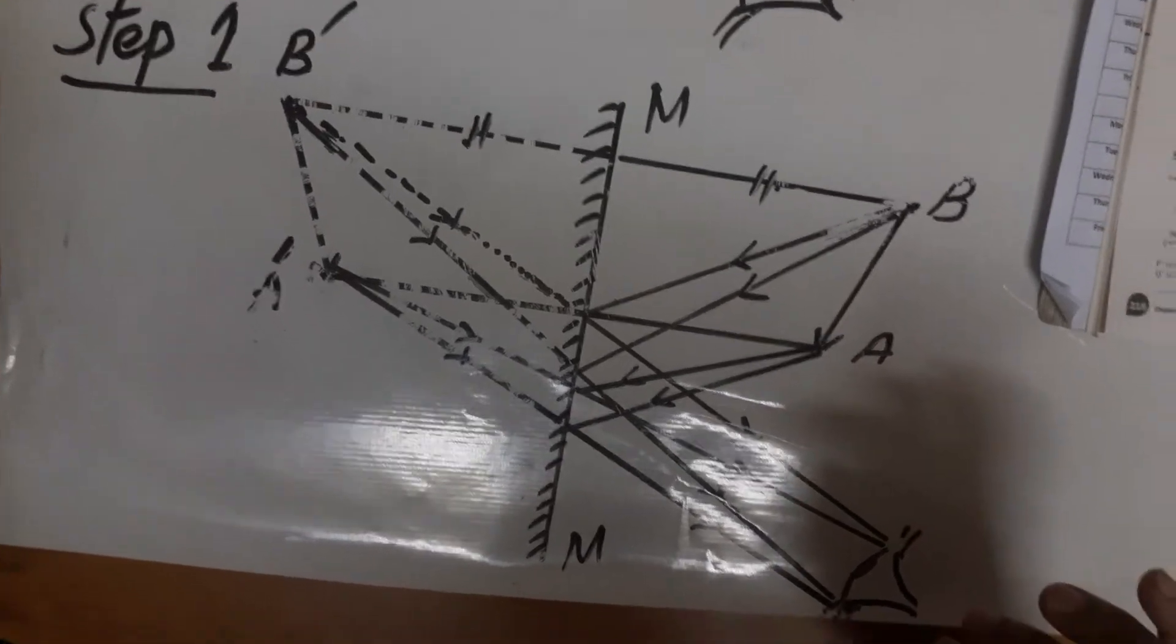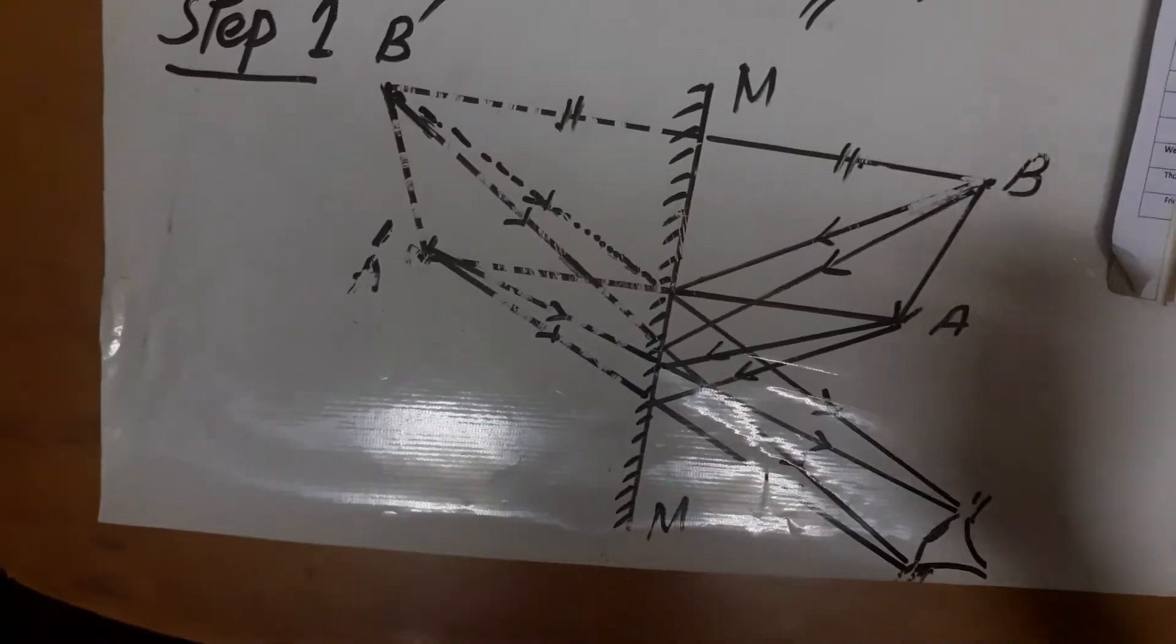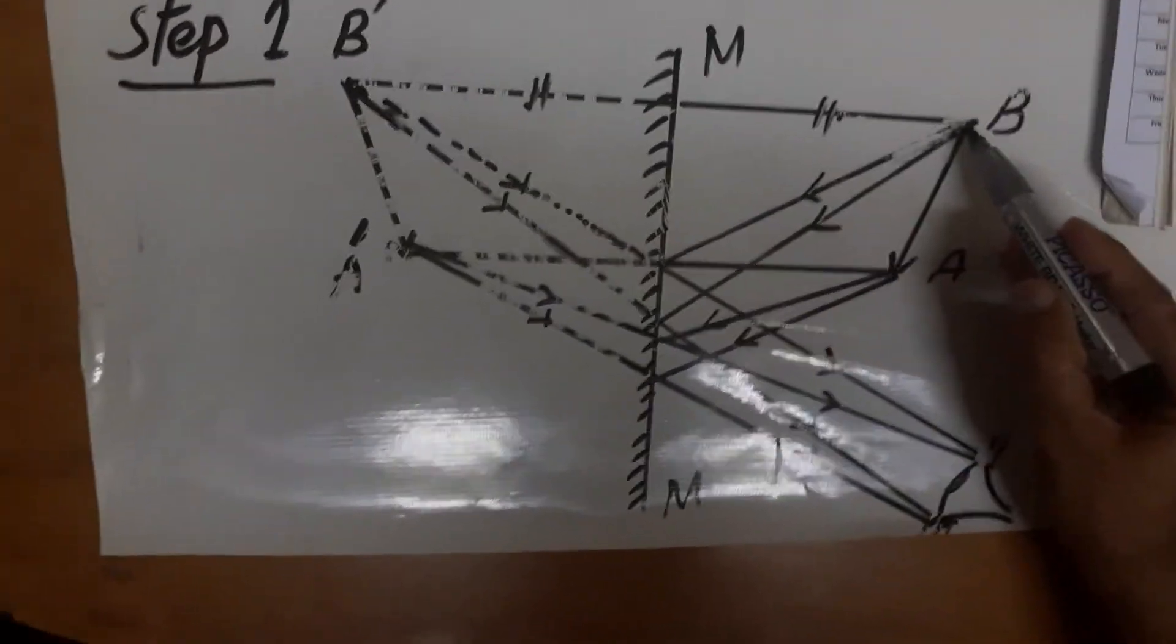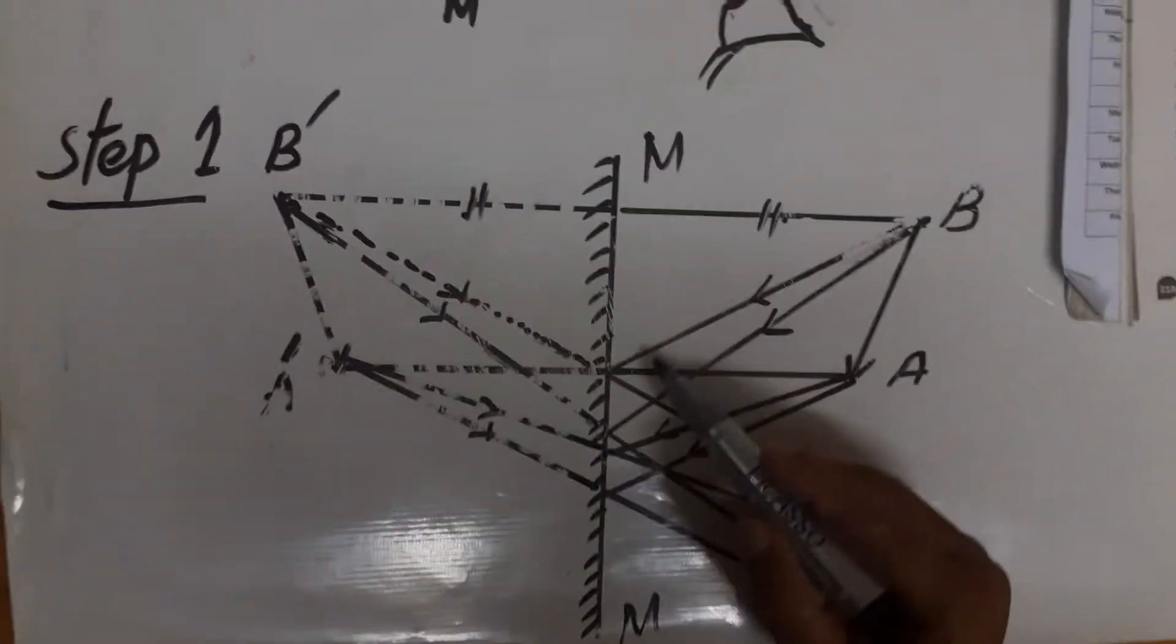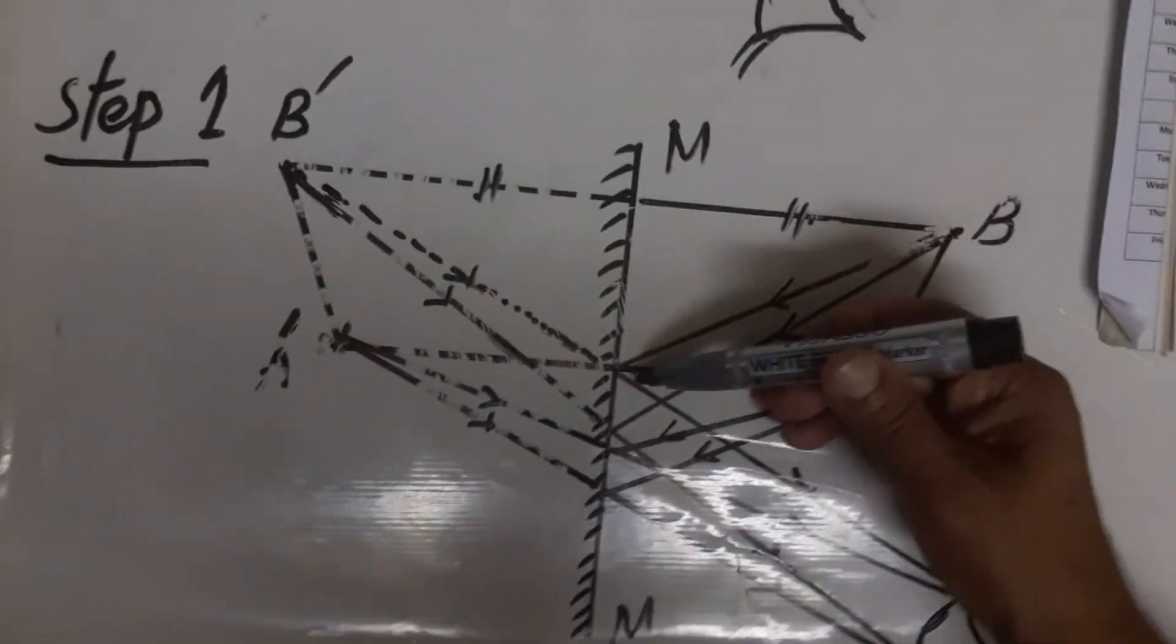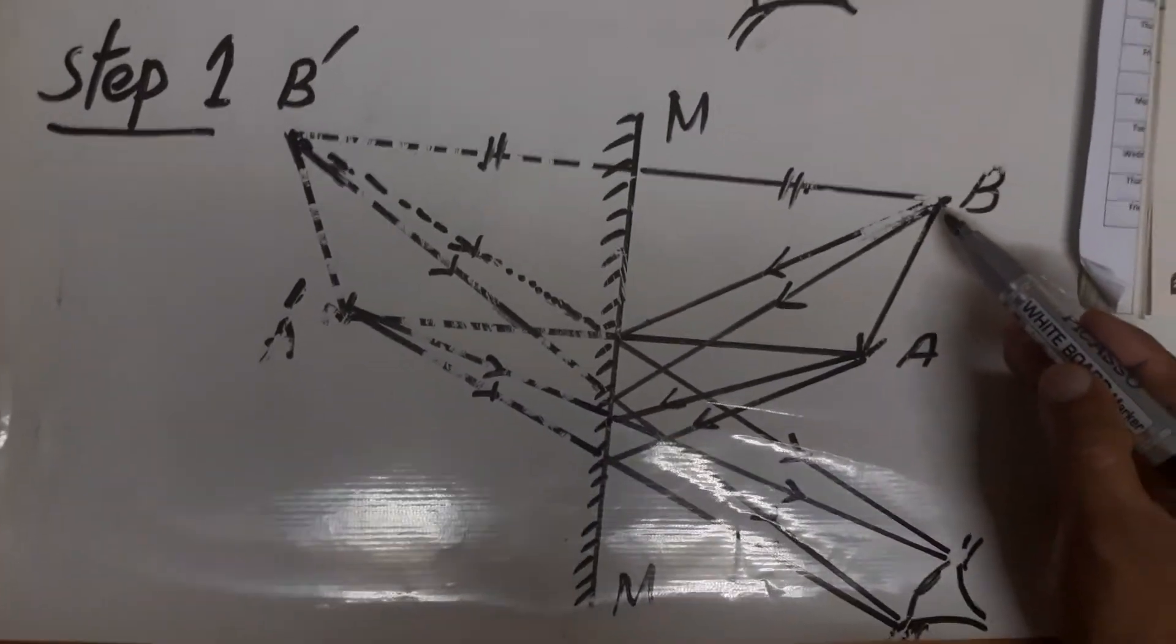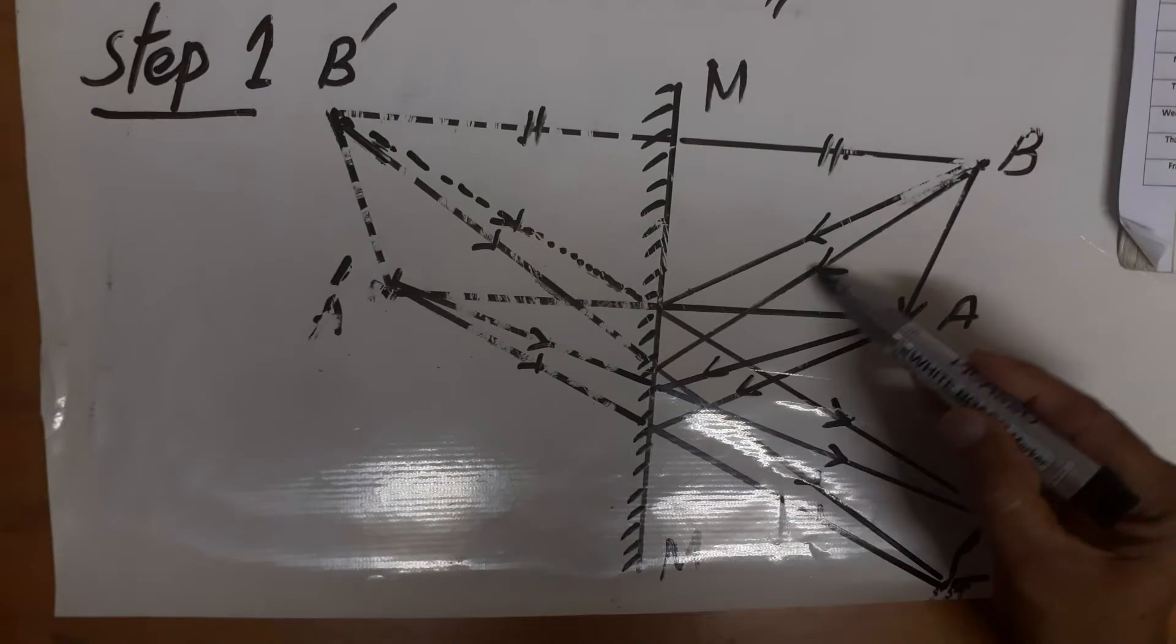Now how the rays will be obtained. This ray comes and strikes with the mirror and is reflected back to the eye. Same, second ray.